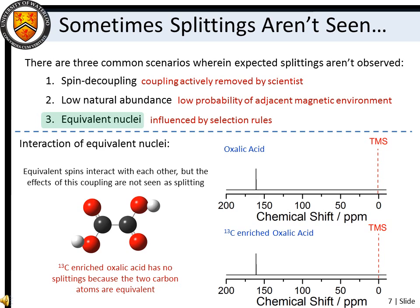For example, the adjacent carbon-13 atoms in carbon-13 enriched oxalic acid do not yield a doublet in the carbon-13 NMR spectrum. The reason behind this lies in molecular symmetry and quantum mechanical selection rules.